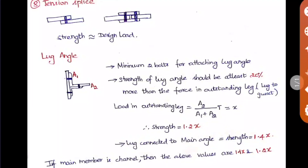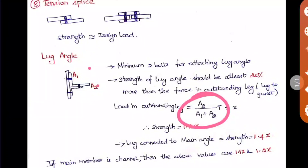The strength of the lug angle should be at least 20% more than the force in the outstanding leg. The force in the outstanding leg equals (A2 / (A1 + A2)) multiplied by the total load — just the ratio of the area into the given load. Let us call this whole term x. So the strength of the lug angle should be at least 1.2x when the lug is connected to the gusset plate.